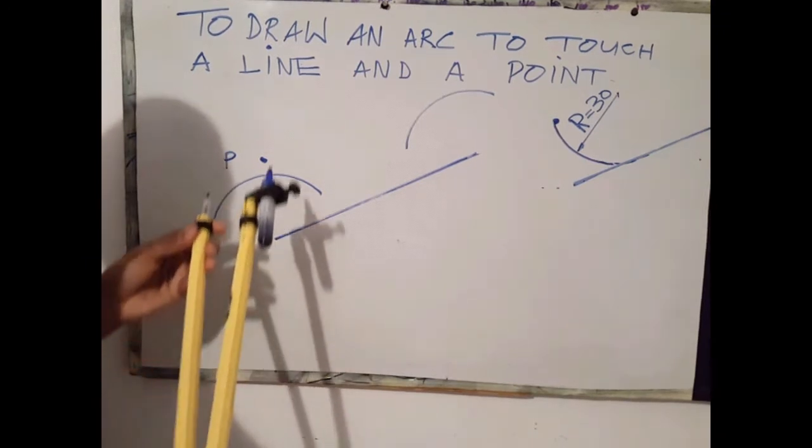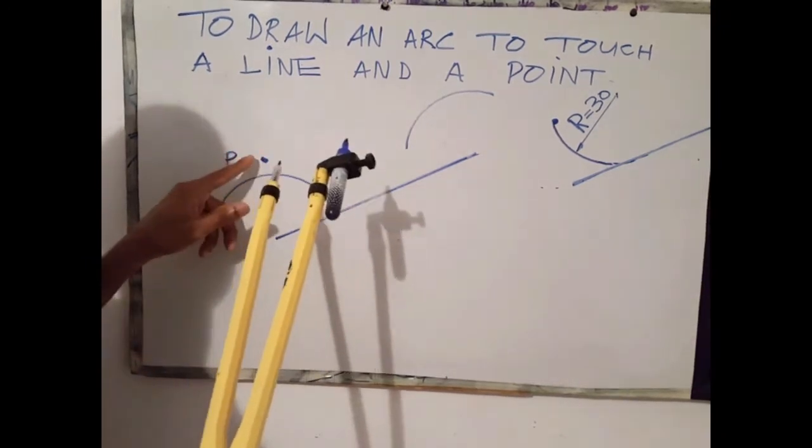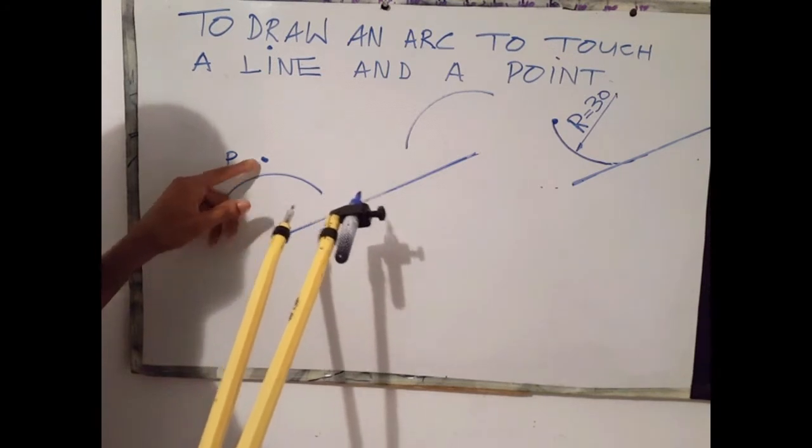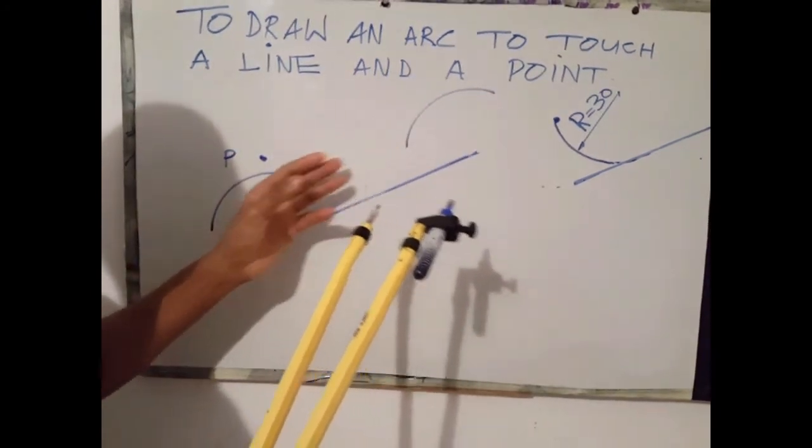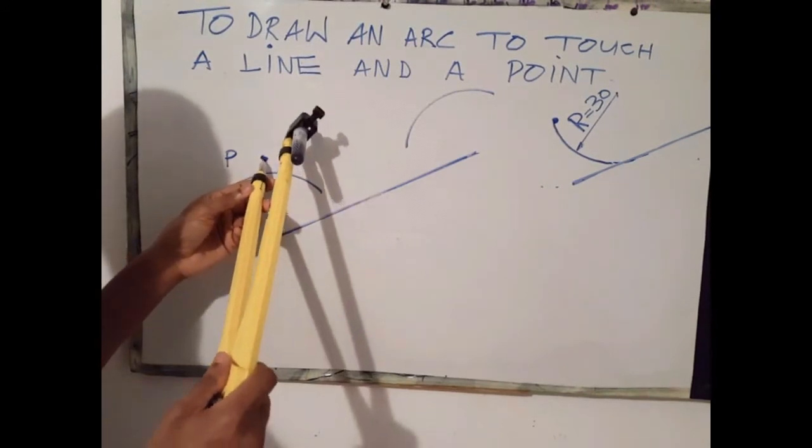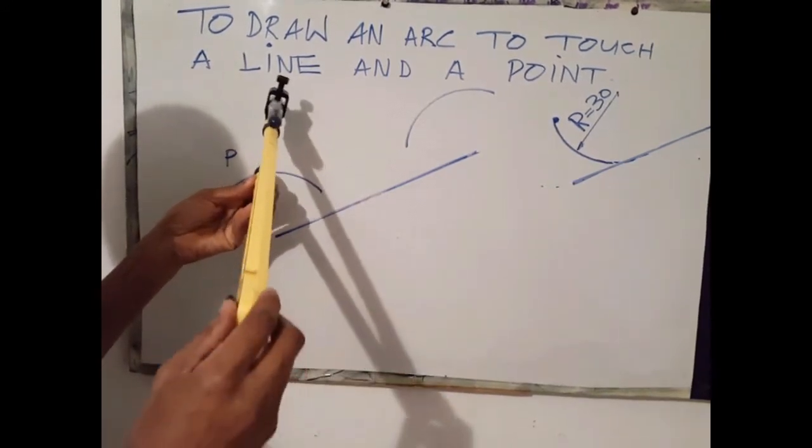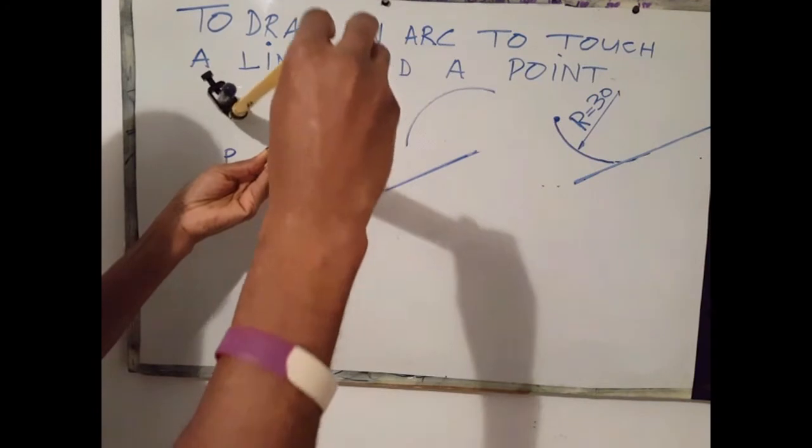What you could do is you could also use the same radius to scribe an arc from point P, or you could go ahead and draw the parallel line. I choose to use one stone and kill both birds, so I'm going to use the same radius to draw an arc from point P.